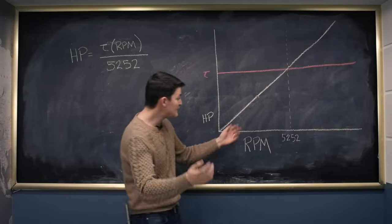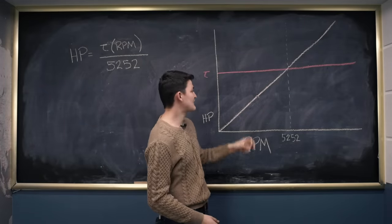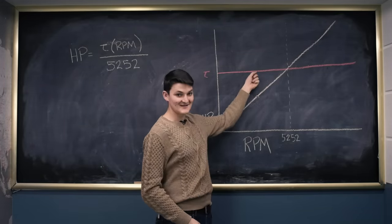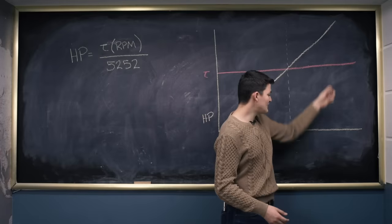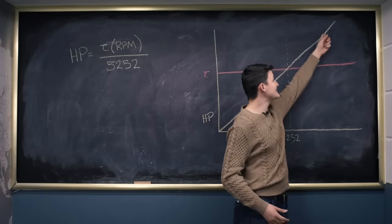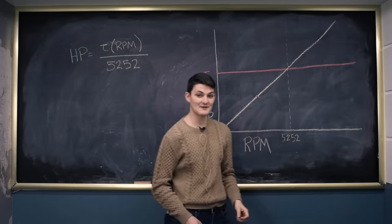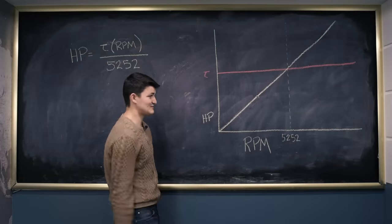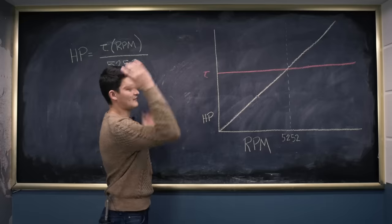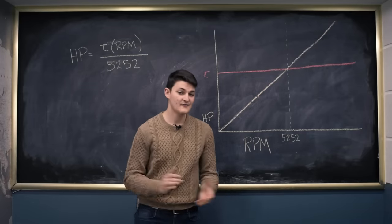One is a function of the other. If you're feeling 40 horsepower at 3,000 RPM, you're feeling 70 foot-pounds. If you're feeling 70 foot-pounds at 9,000 RPM, you're feeling 120 horsepower. To experience one is to experience the other. Horsepower can't do anything torque hasn't already done, and vice versa.